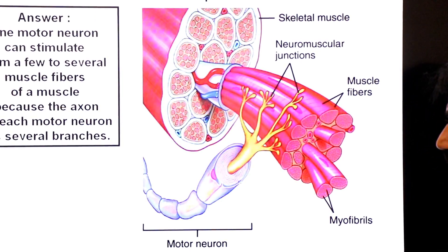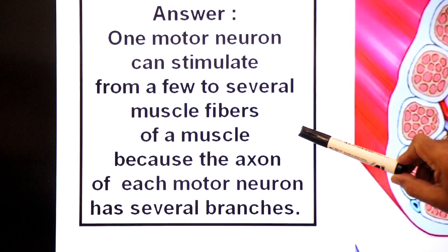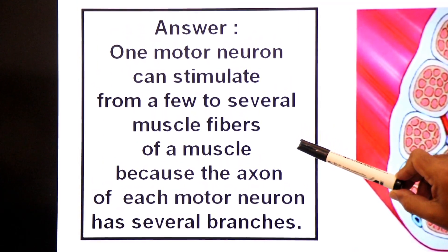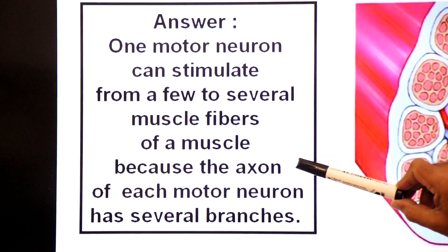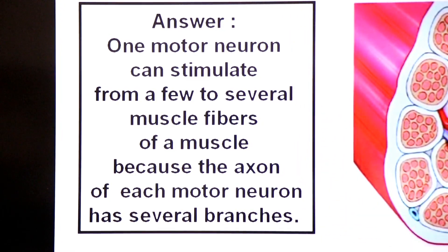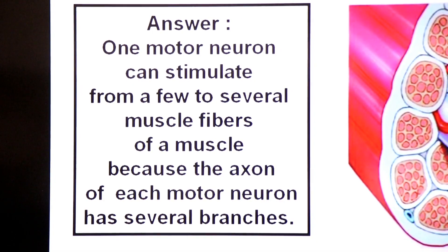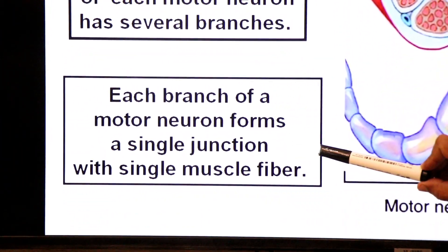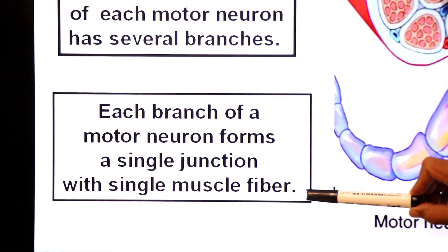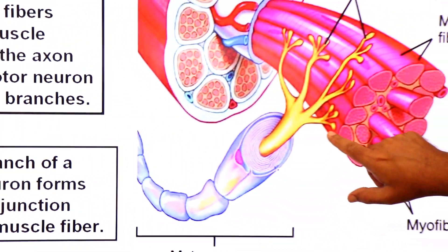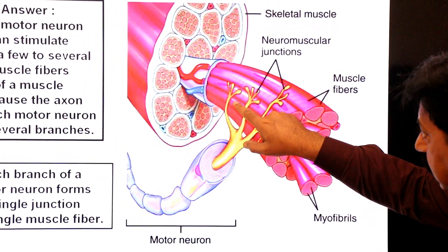One motor neuron can stimulate from a few to several muscle fibers of a muscle because the axon of each motor neuron has several branches. Each branch of the motor neuron forms a single junction with a single muscle fiber, so the neuromuscular junction is established at each branch.